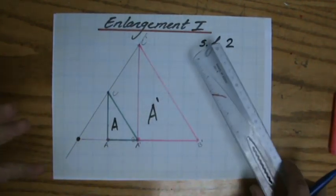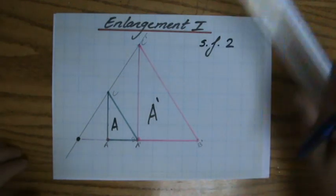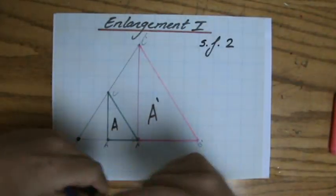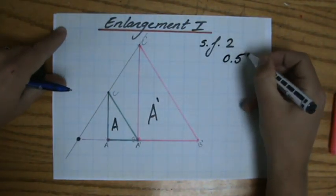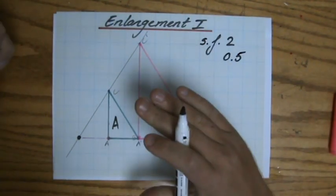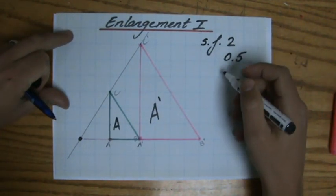So that is enlargement. You're going to get a scale factor and you are going to get a center of enlargement. Now, in the next video, I'm going to show you what will happen if the scale factor is 0.5. So what happens if the scale factor is between 0 and 1.